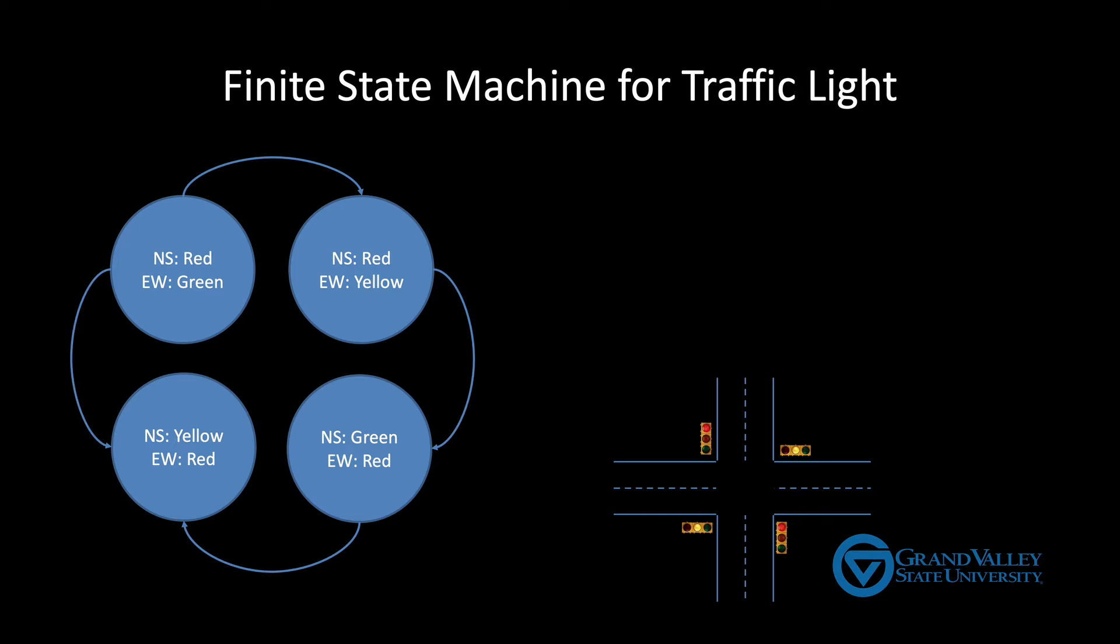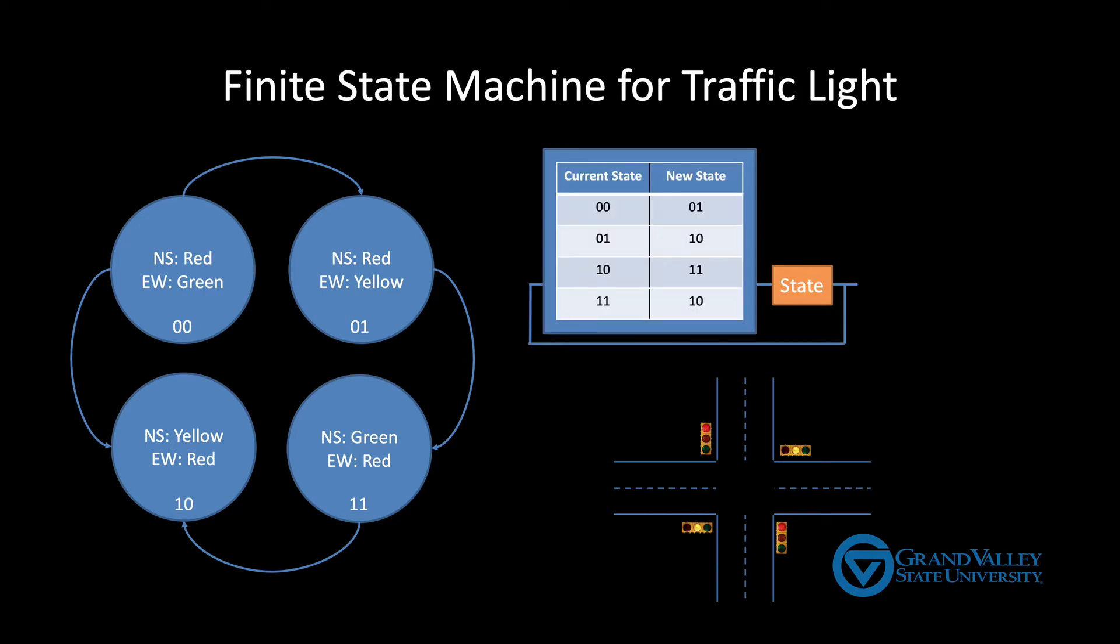We can build a circuit that implements this behavior using the sequential circuit model from the previous video. First, we number the states. Then we create a 2-bit register to remember this state. And now we just need a combinatorial circuit to compute the new state based on the current state. In this case, it's also helpful to have a combinatorial circuit that determines the color each light is supposed to display based on the current state.